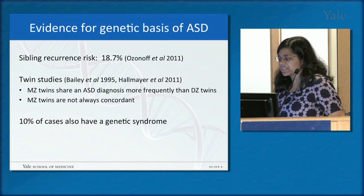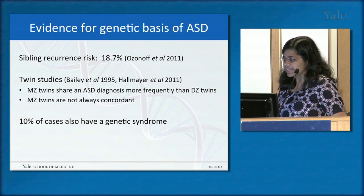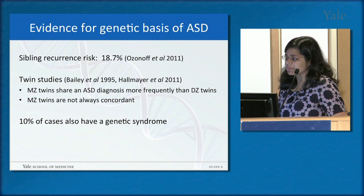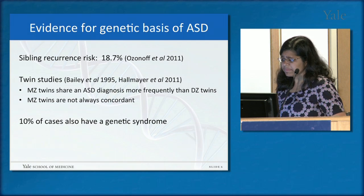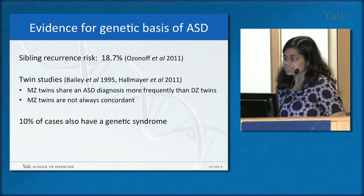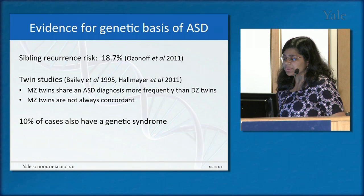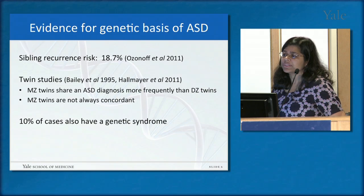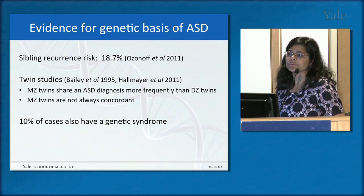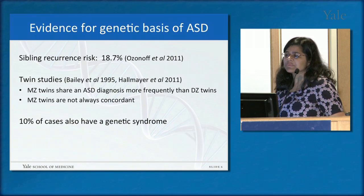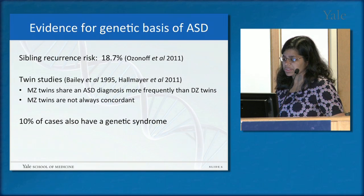To address that question, genetics researchers look at twins. Dizygotic twins share about 50% of their genetic information, like any brother-sister pair. But monozygotic twins are identical — they share 100% of their genetic information. Research has shown that monozygotic twins share a diagnosis more frequently than dizygotic twins, suggesting something genetic is going on. However, MZ twins are not always concordant, meaning autism is not 100% genetic. Most geneticists would say there are probably some unknown environmental triggers as well.